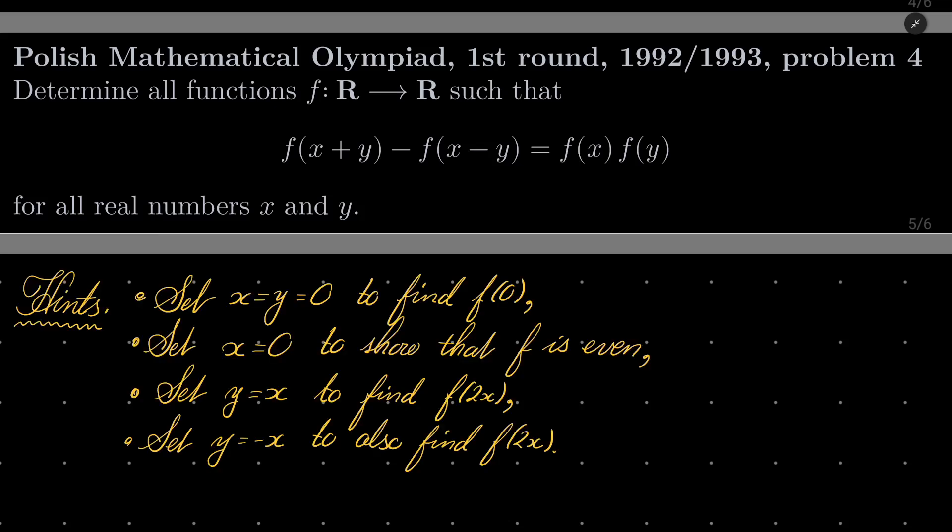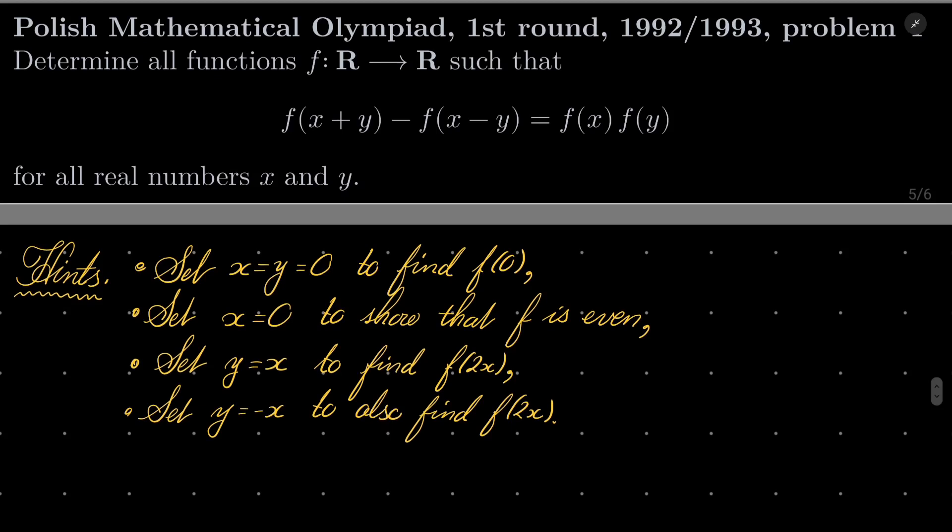Here are my hints. First, set x and y to be 0 to find f(0). Then set x to be 0 to show that our function is even. Then set x to be y and finally y to be minus x and compare the two results which you get. So give this problem a try, and I will see you in just a minute.